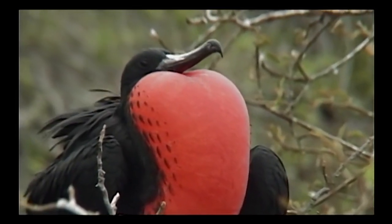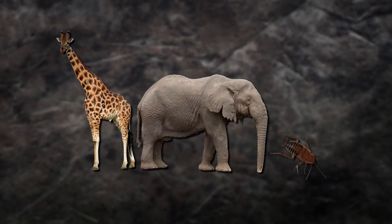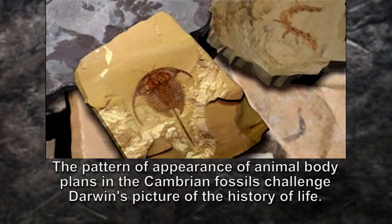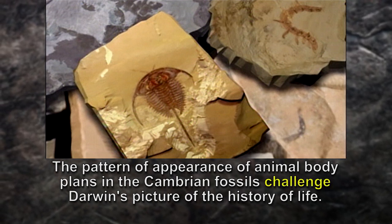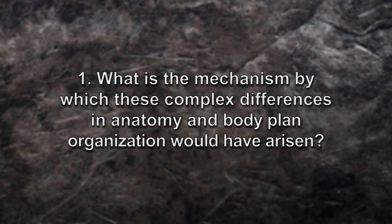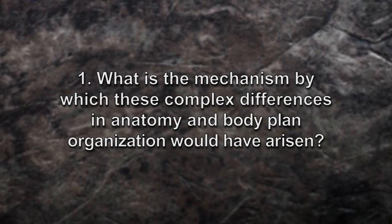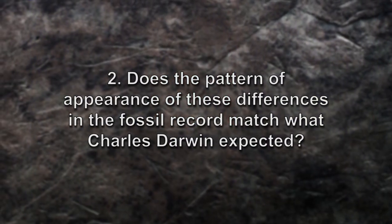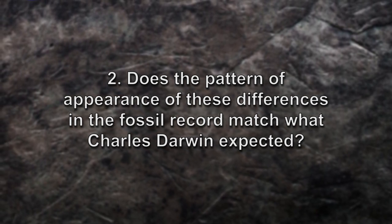If one reads The Origin of Species, it's clear that Darwin's caught in a bind. When you look at the world, there's a difference between a giraffe, an elephant, and a cockroach — and what you're saying is it took information to make those differences, a lot of different information. When you go back to the pattern of appearance of animal body plans, even in the Cambrian fossils, they challenge the Darwinian picture of the history of life. There are really two issues: what is the mechanism by which these complex differences in anatomy and body plan organization would have arisen? Can natural selection and random mutations generate the different kinds of information necessary to build those animals? And secondly, does the pattern of appearance of these differences in the fossil record match what Charles Darwin expected?